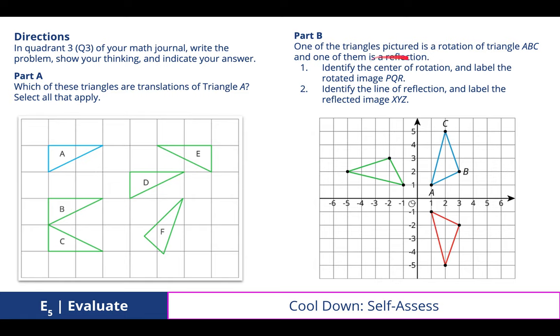And then part B, one of the triangles pictured is a rotation of triangle ABC, and one of them is a reflection. And so we discovered that this pre-image ABC rotates counterclockwise 90 degrees from the first quadrant to the second quadrant to form the image that is in green. And the point of rotation is the origin.